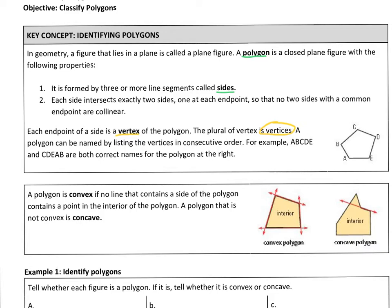A polygon can be named by listing those vertices in consecutive order. So for this polygon, an easy way to do it: A, B, C, D, E - naming those vertices in order. You could flip that order around and name it E, D, C, B, A.